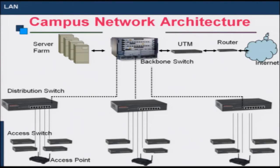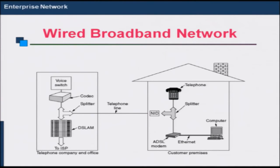Finally, the network would also have a firewall or a UTM device to connect it to the internet. Similarly, if I want to provide connectivity in residences and homes, then two technology options are used: one is wired broadband and the other is wireless broadband.